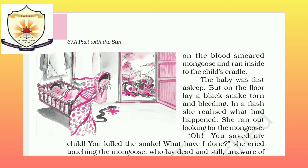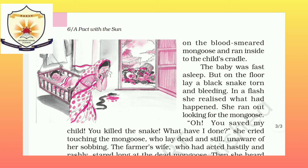But on the floor lay a black snake, torn and bleeding. She saw a black snake on the floor which was torn — cut apart — and bleeding. Blood was flowing from it. Someone had cut it in the middle and damaged it. So there was a snake whose blood was flowing and which had been cut apart.